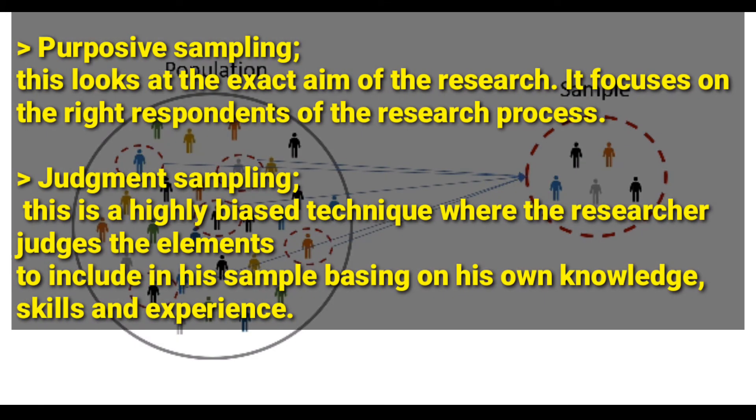Another one is called judgmental sampling. This looks at the exact aim of the research. It focuses on the right respondents of the research process. Purposive sampling looks at the exact aim, the exact reason why you're doing research. That's what we call purposive.